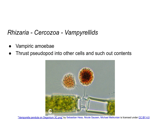The vampyrellids — a great name for a protist — are vampiric and predatory, meaning they have a pseudopod. You can see it here. They can basically stick that pseudopod into other cells and suck out the contents. You can see the vampyrellid with its pseudopodia inserted into another cell, having the contents sucked out.